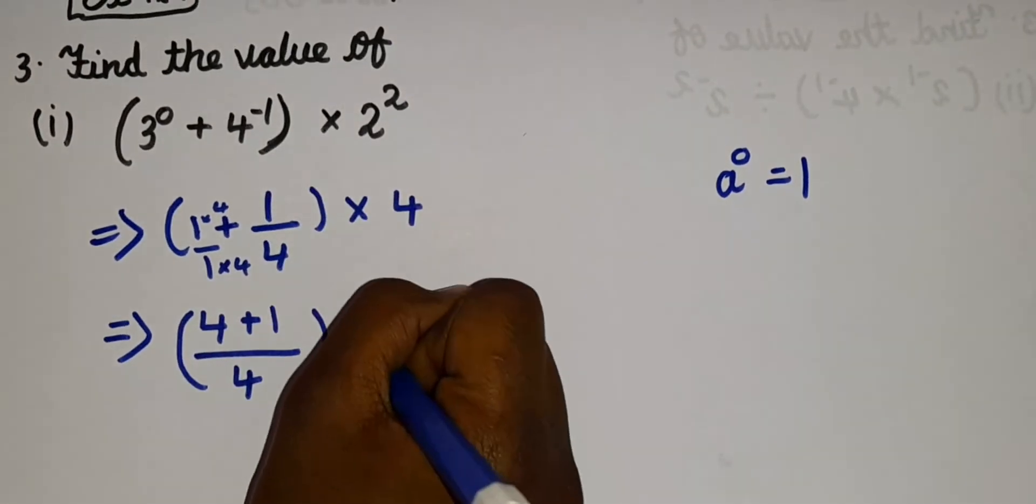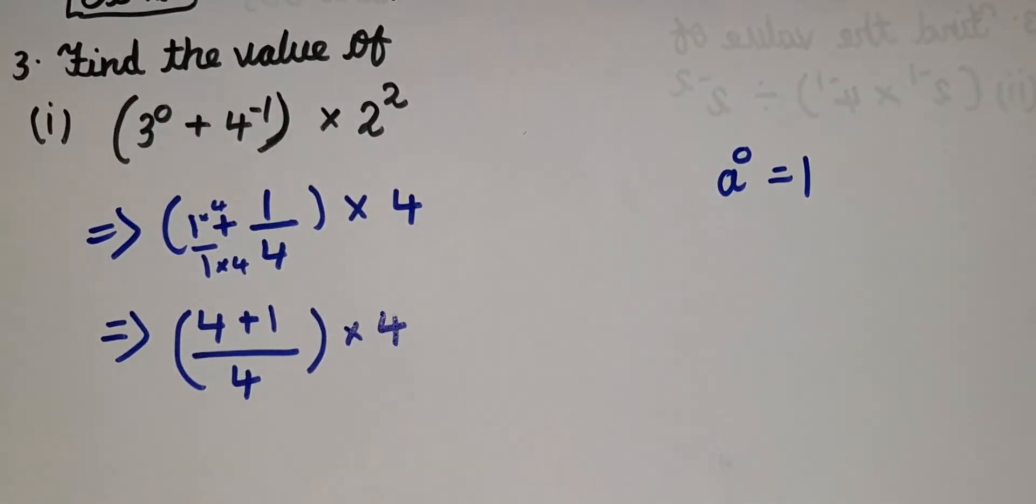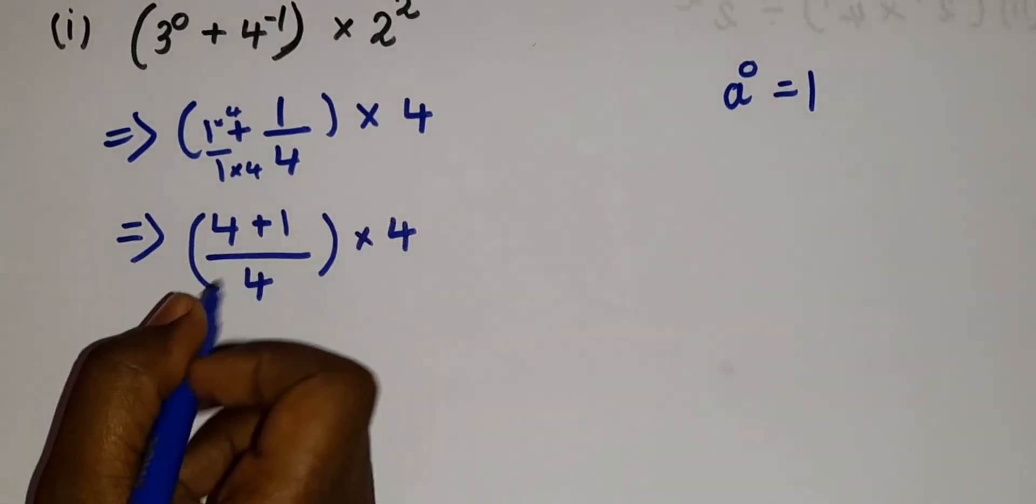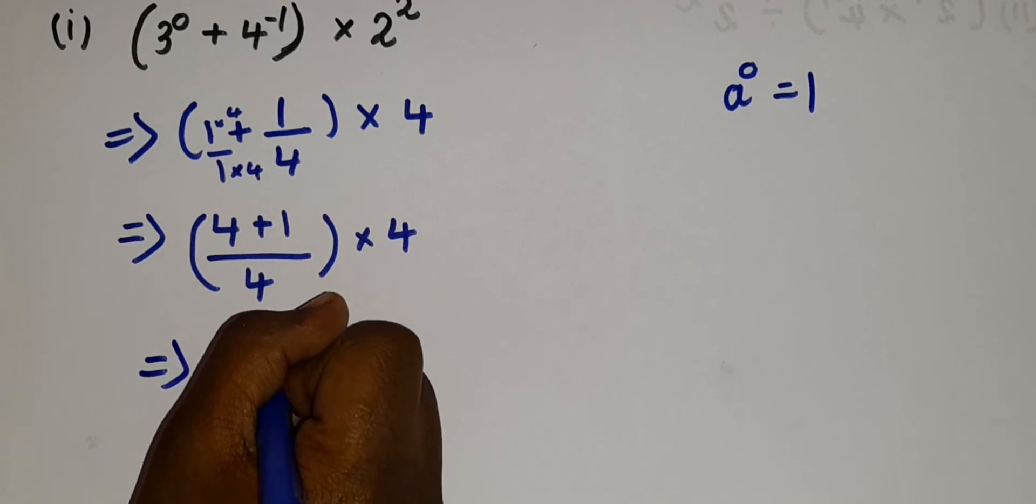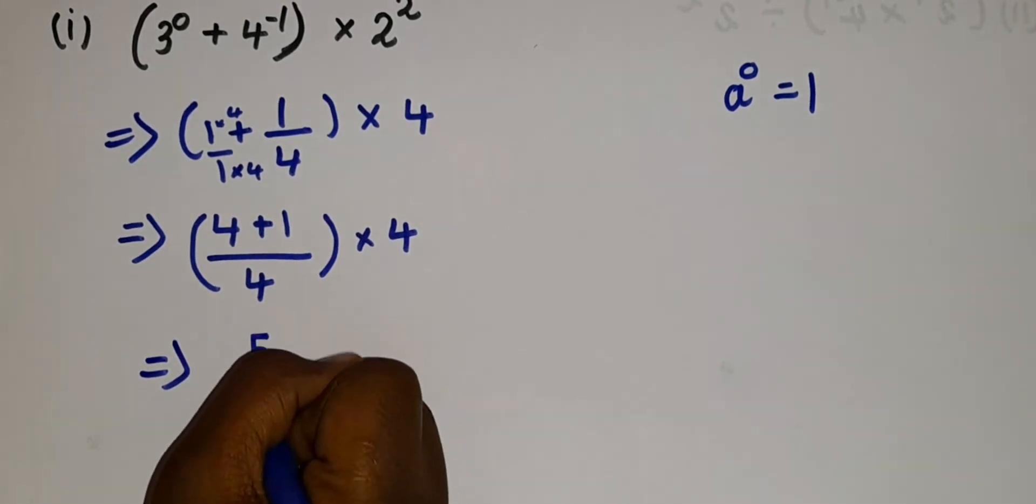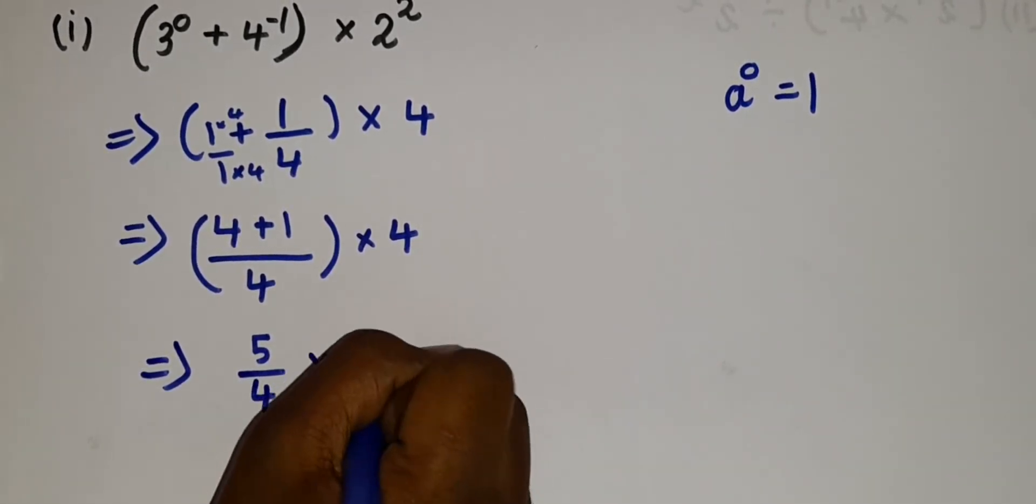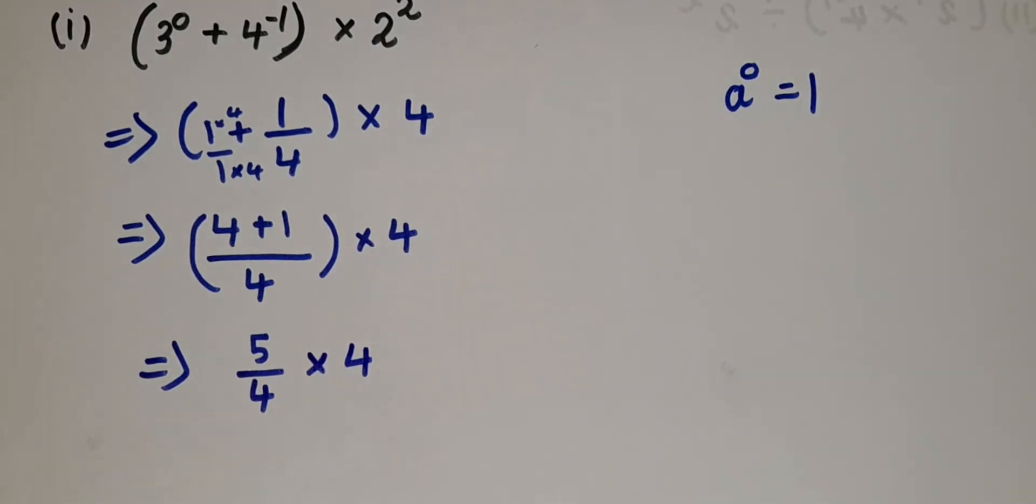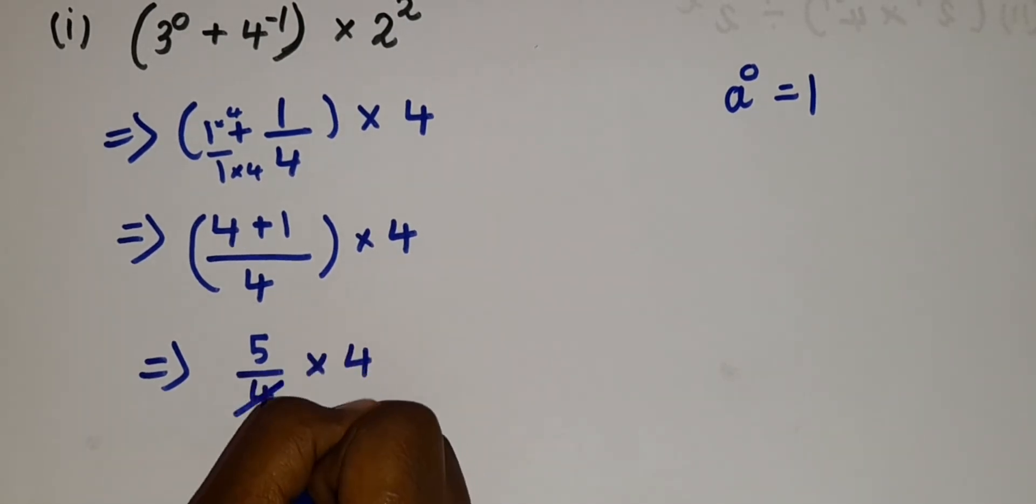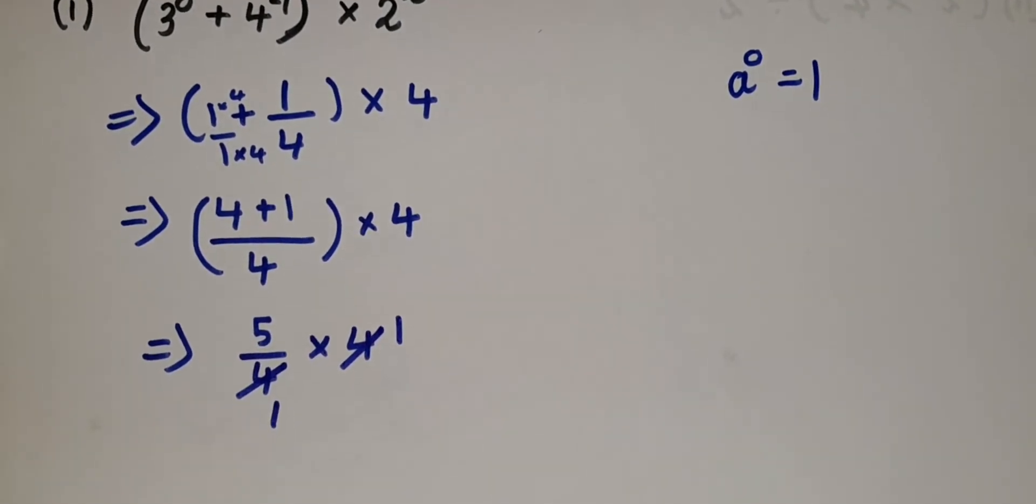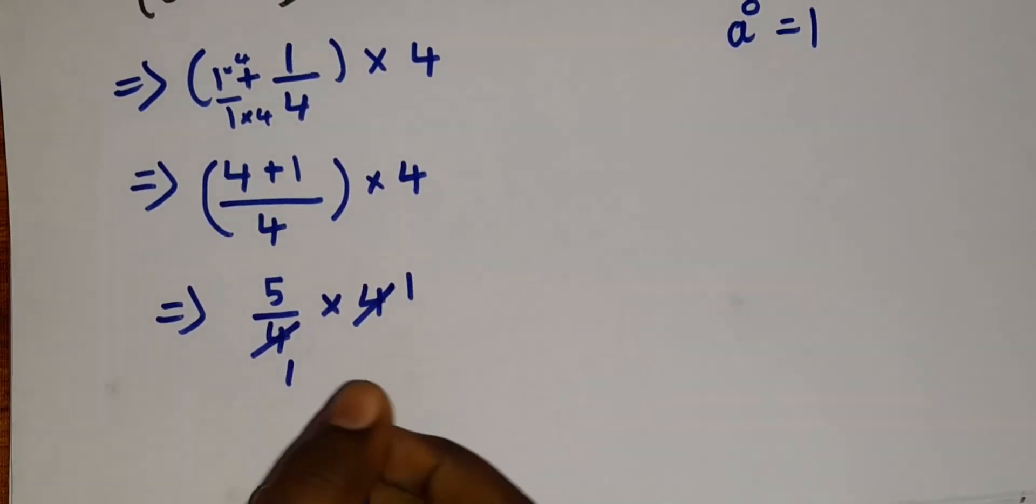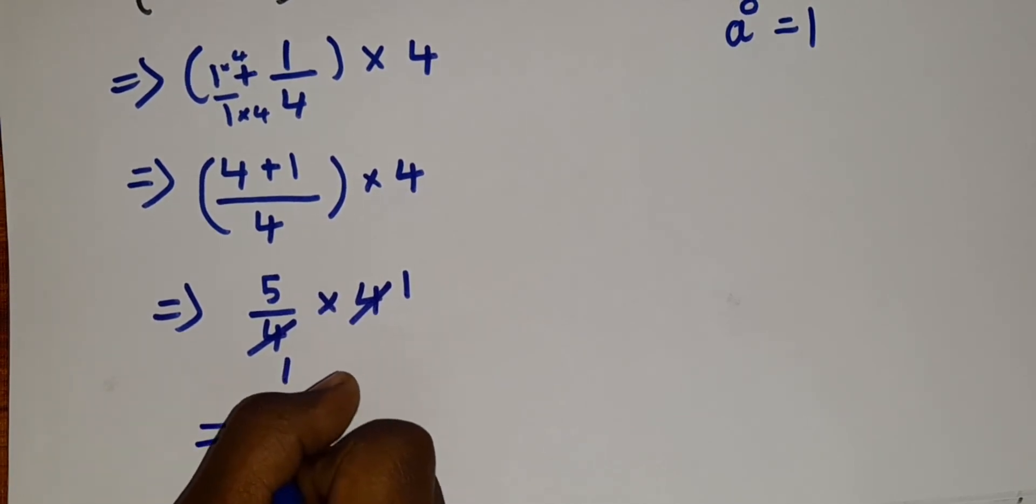So now we can write into 4 as it is. So here you guys can see, we can add it, right? 4 + 1. So 4 + 1 is 5, which means 5/4 × 4. So here you guys might notice one thing, that is we can cancel the 4. So 4 ones are 4. So now what is left? Only the 5 is left, which means our answer is 5.